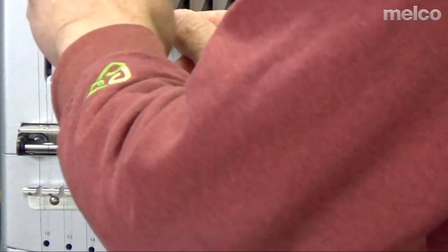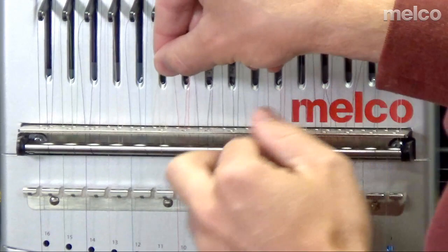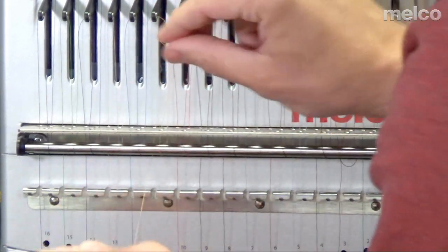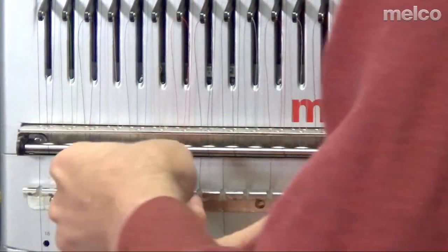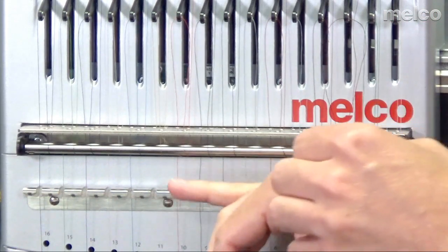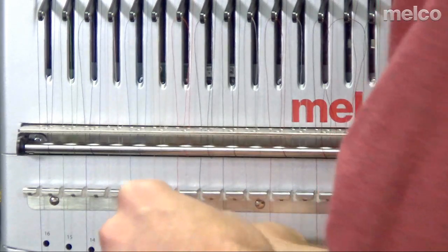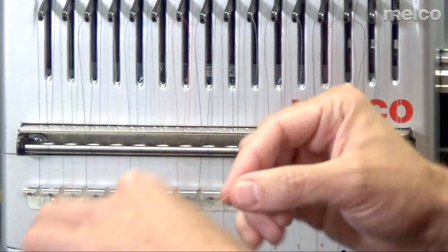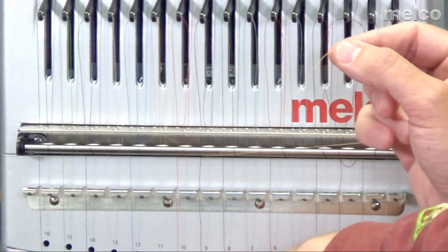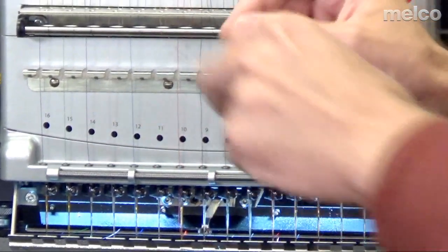Then the thread sensor can't feel it, and it doesn't think it's really there. So then I'm going to go back up through the front. So now that loop is looping around that bar thread sensor. I'm going to go through the take-up lever from the right to the left, and then I'm going to go back down through the last one, which is the end of the leg of the L, or I guess since it's upside down, it would be, is that a seven? Sure.